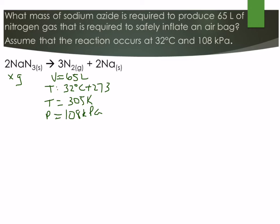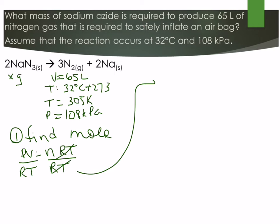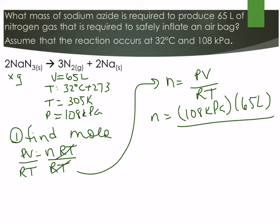In this case we want to find our moles first and so we're going to use PV equals nRT to figure out our moles. If we rearrange that for n we'd be dividing both sides by RT. So PV over RT. Let's put our information in. So we have 108 kilopascals, 65 liters all over.